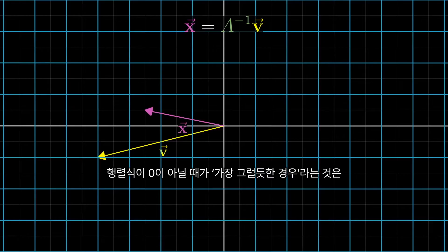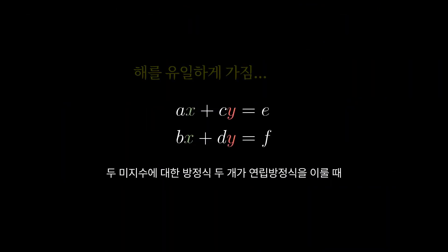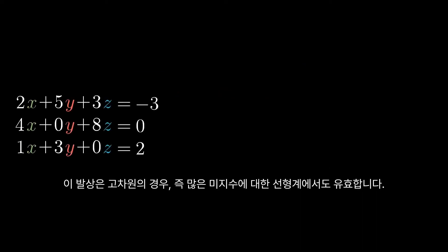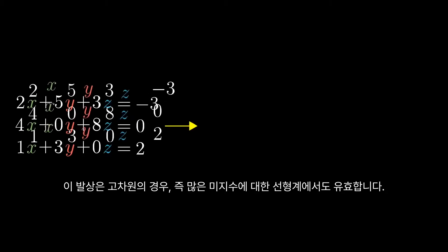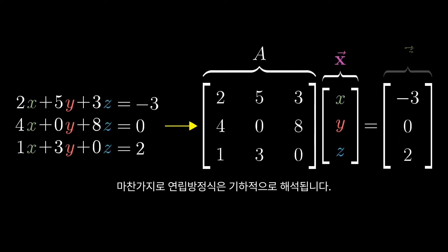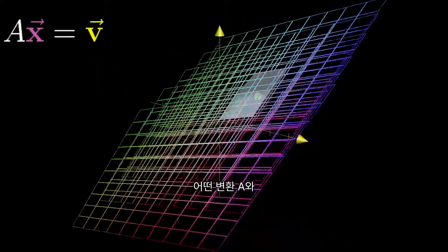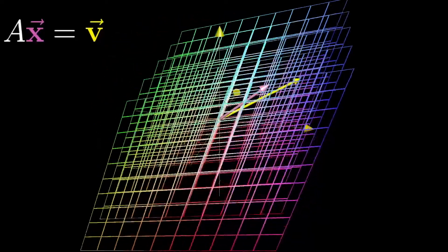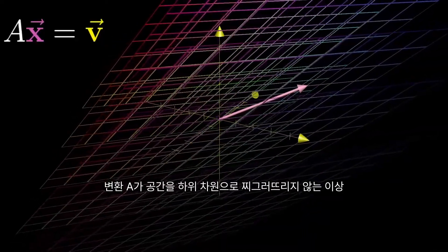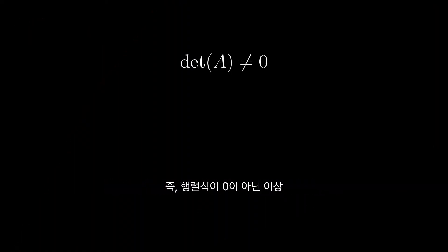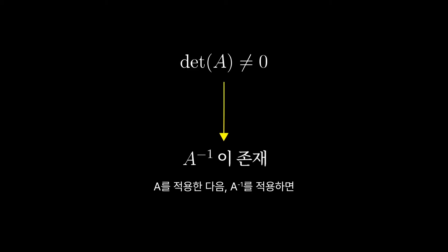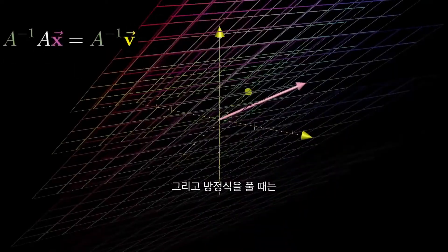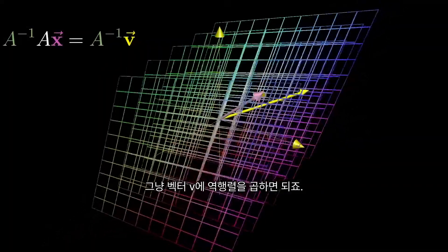This non-zero determinant case, which for a random choice of matrix is by far the most likely one, corresponds with the idea that if you have two unknowns and two equations, it's almost certainly the case that there's a single unique solution. This idea also makes sense in higher dimensions when the number of equations equals the number of unknowns. Again, the system of equations can be translated to the geometric interpretation where you have some transformation A and some vector v, and you're looking for the vector x that lands on v. As long as the transformation A doesn't squish all of space into a lower dimension — meaning its determinant is non-zero — there will be an inverse transformation A-inverse, and to solve your equation you just multiply that reverse transformation matrix by the vector v.